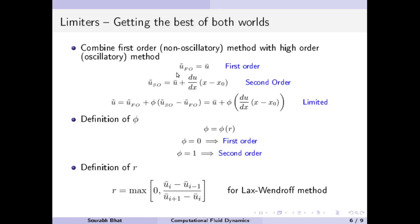If we do a reconstruction using the first order method, we just take the average value. For a second order method, we take the average value and then add the derivative at the centroid multiplied by the distance of x from the centroid. That gives us the reconstruction for a second order method, and we combine these two methods to get a higher order method.